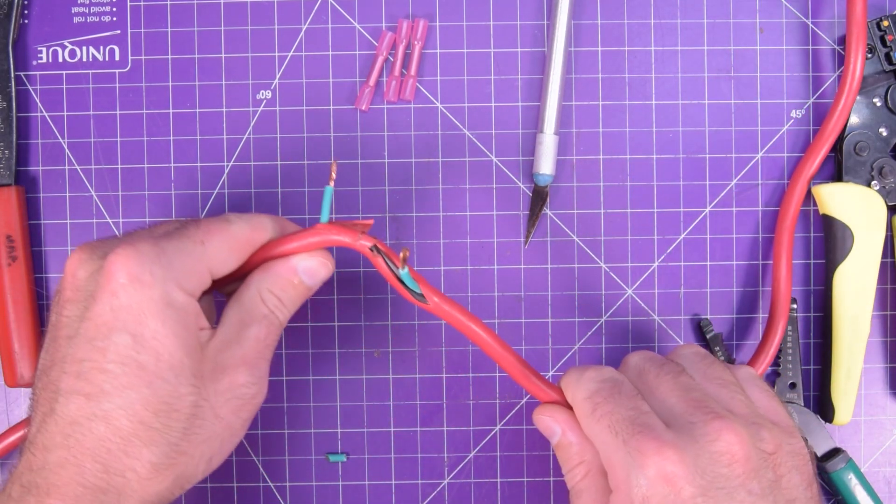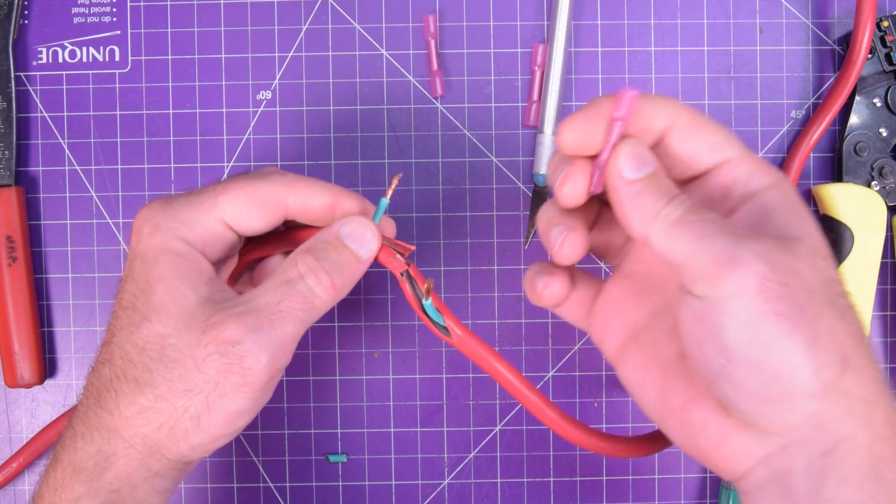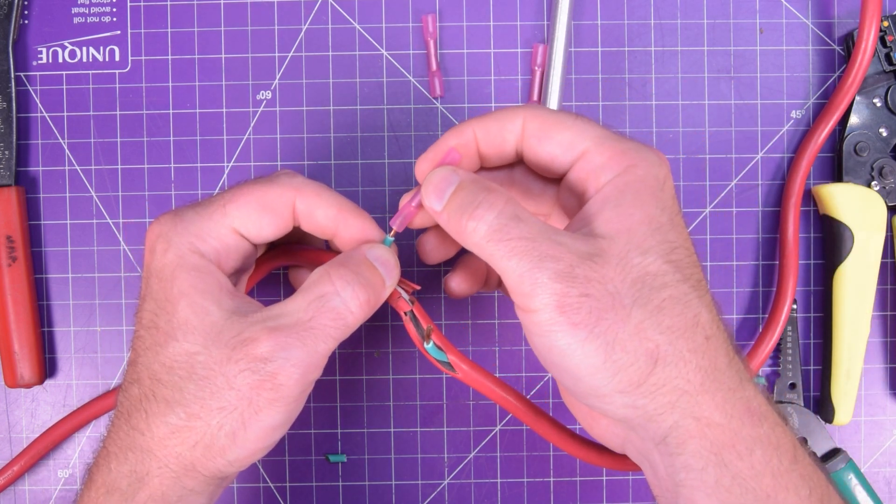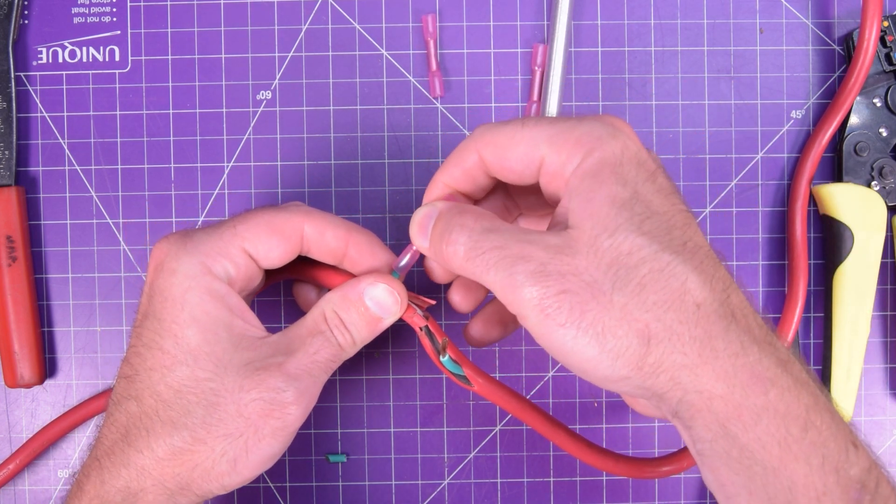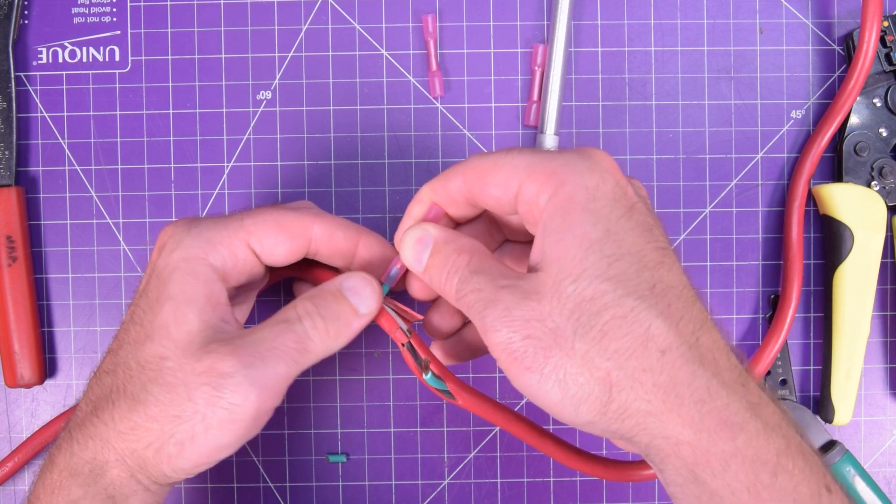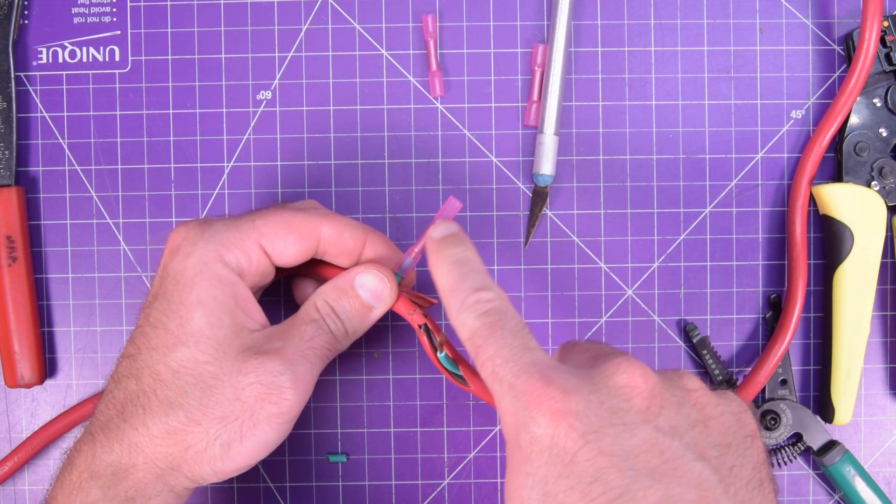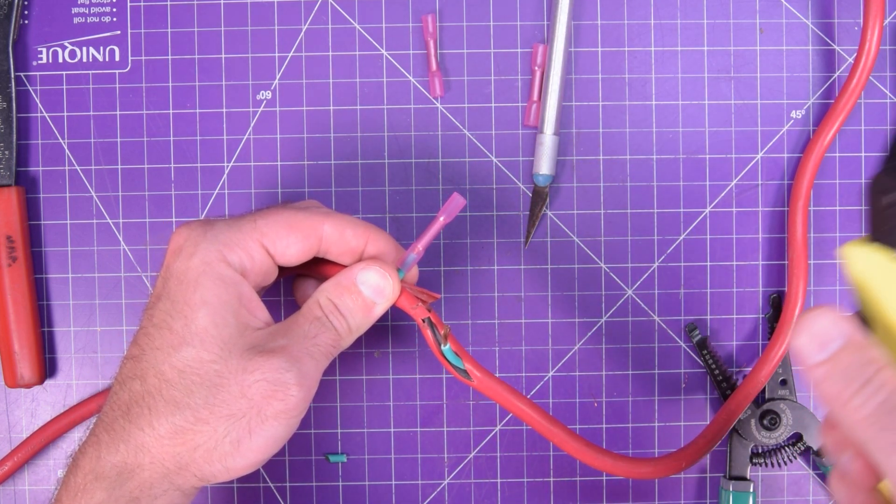Now you want to head down to Amazon or eBay and get some of these. These are crimp-on butt splices, but you want the ones with the milky color because they have a glue inside.